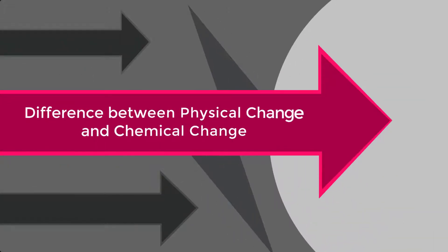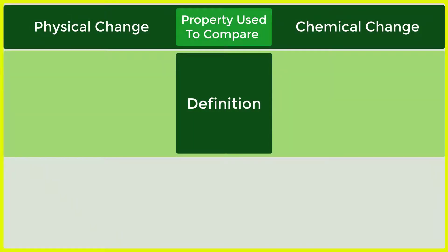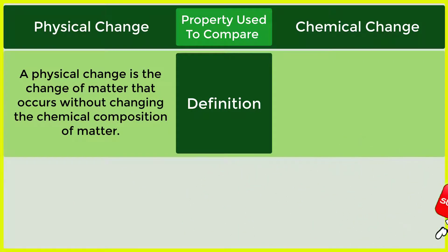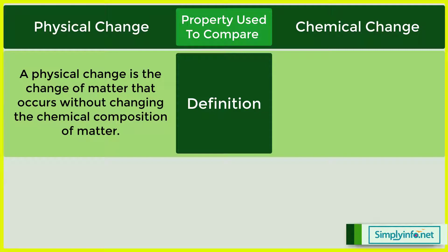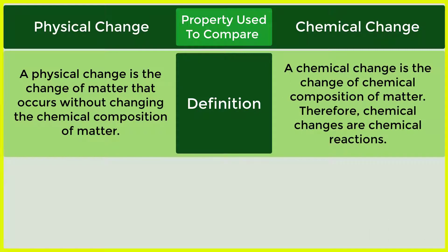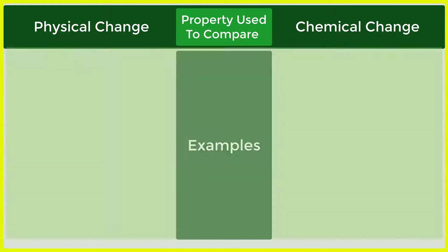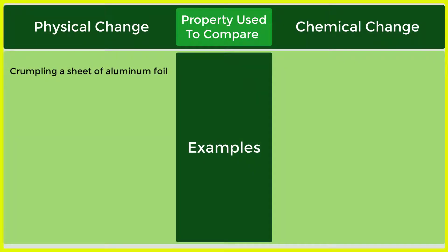The difference between physical change and chemical change. A physical change is the change of matter that occurs without changing the chemical composition of matter. A chemical change is the change of chemical composition of matter. Physical changes are reversible in nature, while chemical changes are irreversible.